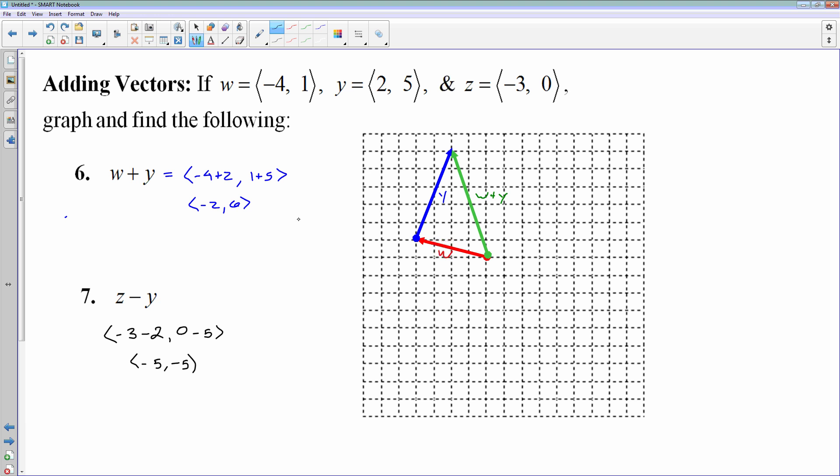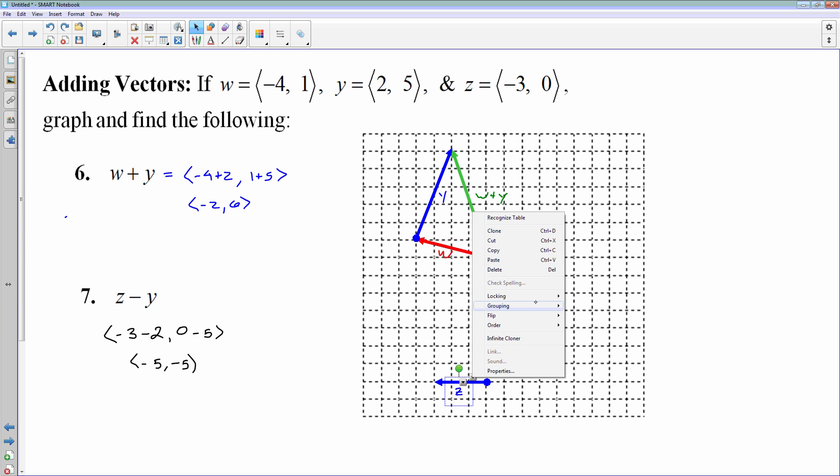My graphing, again, is a little bit complex. We're going to start with the vector z, which is negative 3, 0. So my vector z, I'll do that one in blue here, is negative 3. We'll start and go left 3. And I won't go further down. The vertical component is 0, so there's my vector z. Negative y, if I want to subtract y. Y, initially, the original y went this way, went right 2 and up 5.